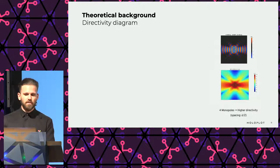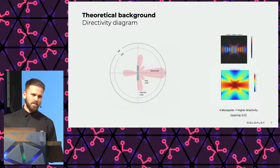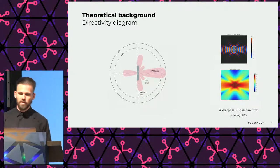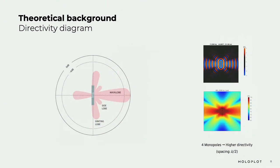The radiation pattern in a given plane — for example the horizontal plane — is what is also called the directivity diagram. In it we can see the main lobe, or main beam, which contains the highest energy and typically shoots toward the audience area. Grating lobes and side lobes are beams with less energy traveling in undesired directions, resulting from spatial aliasing when transducers are positioned too far apart and don't properly interfere constructively.